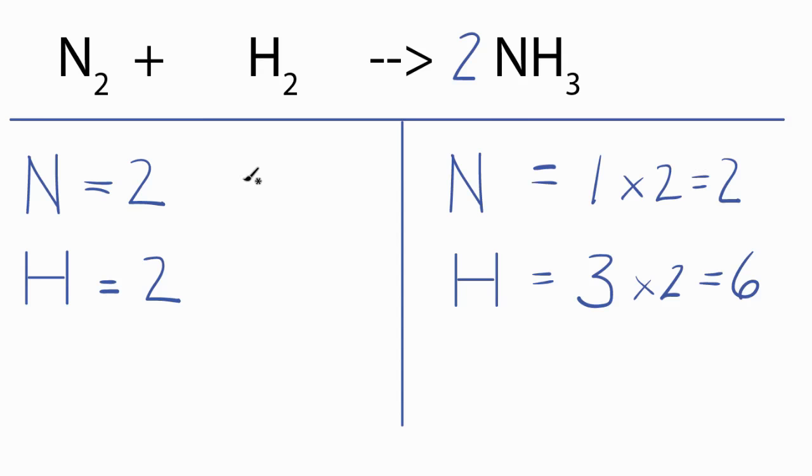Over on the reactant side, we see we have two nitrogens here and two nitrogens there. Those are balanced. And to get six, I'm going to need to multiply this by three. So three times two, that'll give me six.